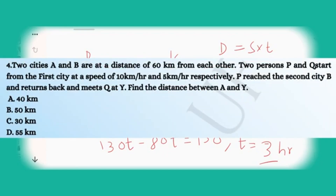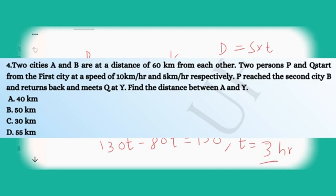Another actual exam question: two cities A and B are 60 kilometers apart. Two persons P and Q start from city A at speeds of 10 km/h and 5 km/h respectively. P goes to city B and returns, and meets Q at point Y. Find the distance between A and Y. Options: 40, 50, 30, or 55 kilometers. Please give your answer in the comment section.